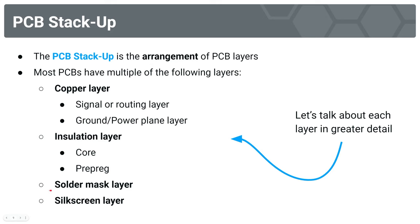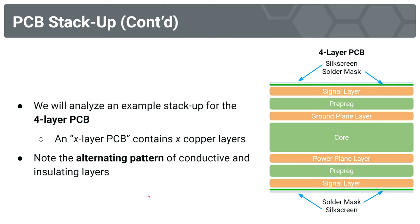Let's take a look at the stack-up for an example four-layer PCB. When I say four-layer, the four refers to four copper layers within the PCB. So any x-layer PCB contains x copper layers. If I had a two-layer PCB, that would be two copper layers. In this diagram on the right, the four-layer PCB has those alternating copper and insulating layers, and because it's a four-layer PCB, we have four copper layers.